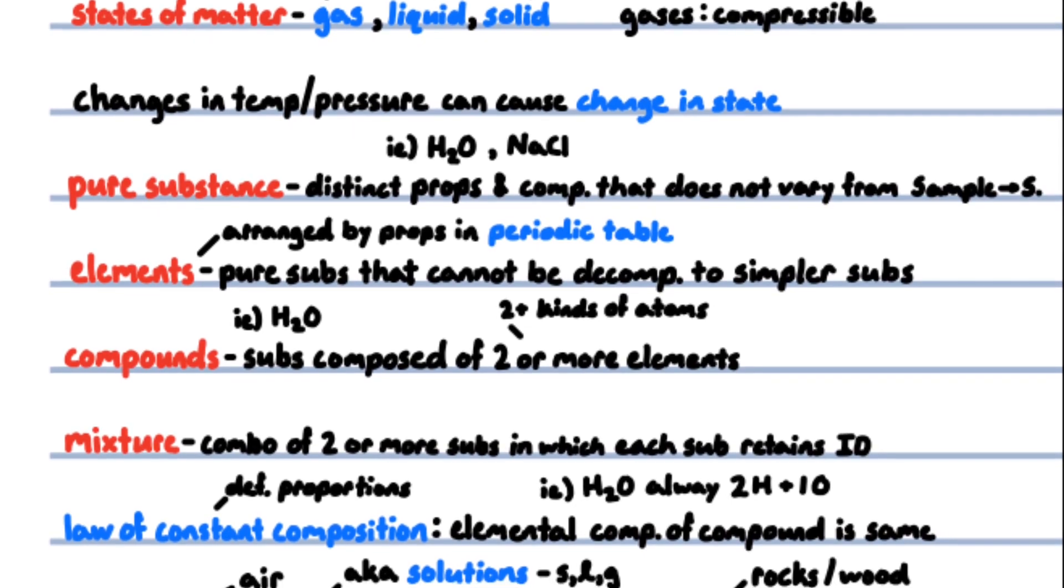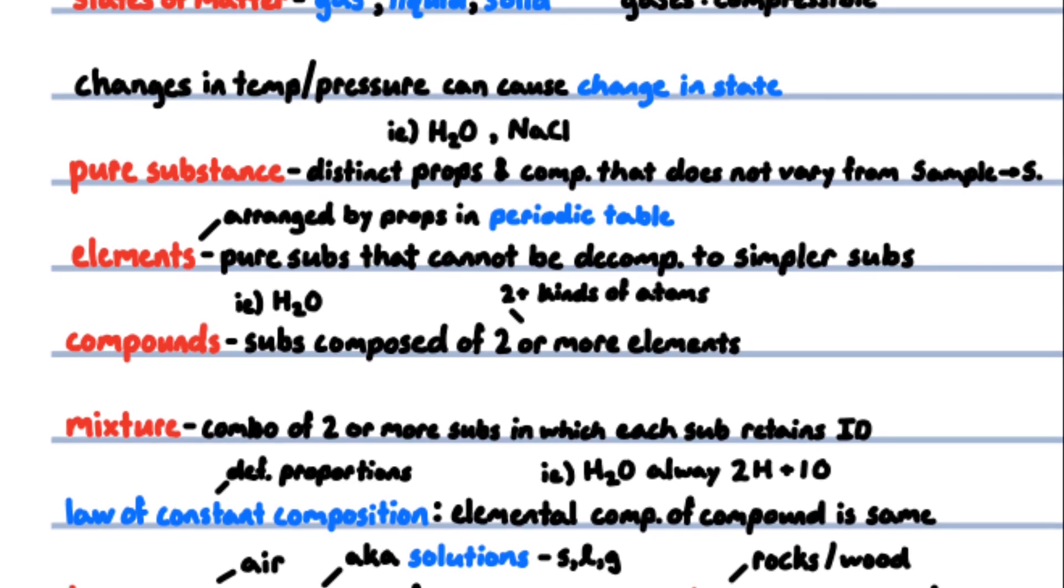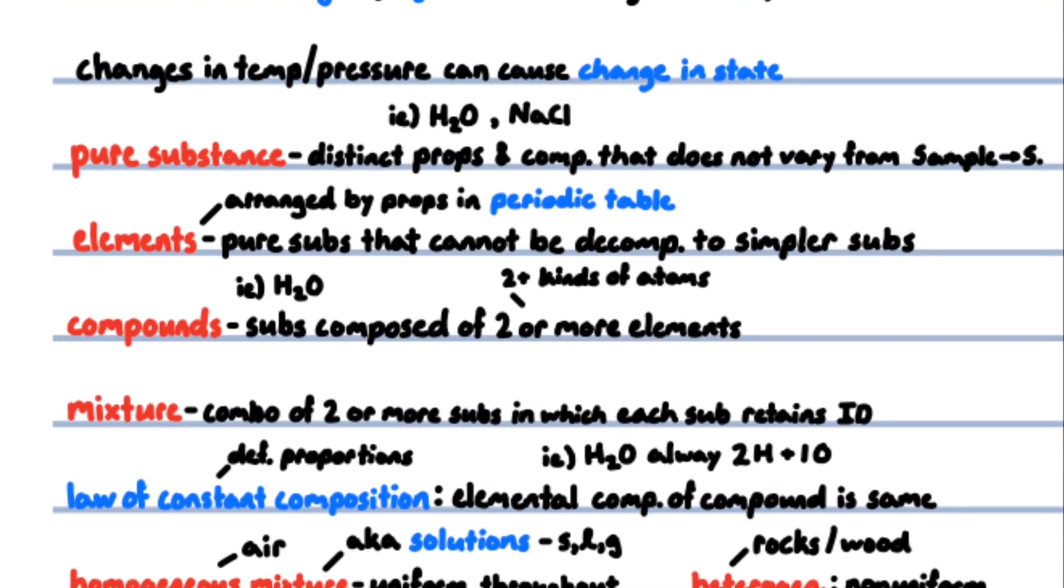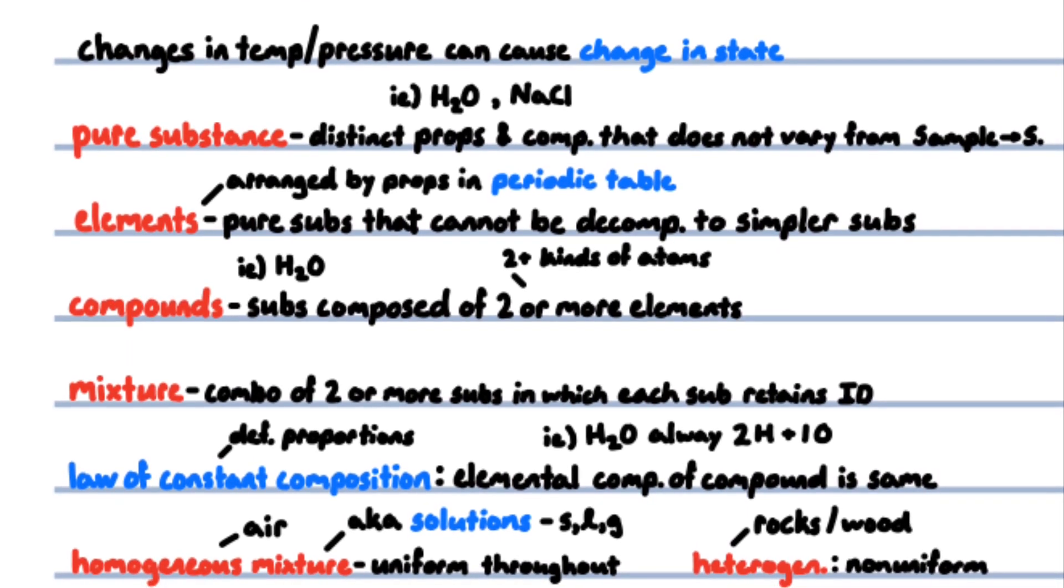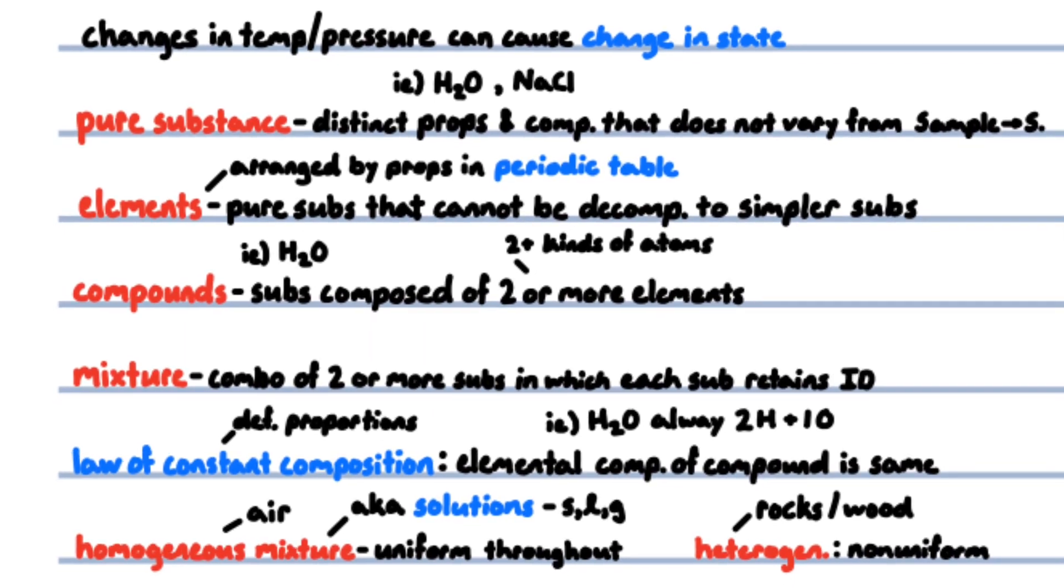Elements are substances that cannot be decomposed into simpler substances, such as hydrogen or helium. Compounds are composed of two or more elements. They contain two or more kinds of atoms, for example, water H2O consists of hydrogen and oxygen. Mixtures are combinations of two or more substances in which each substance retains its chemical identity.